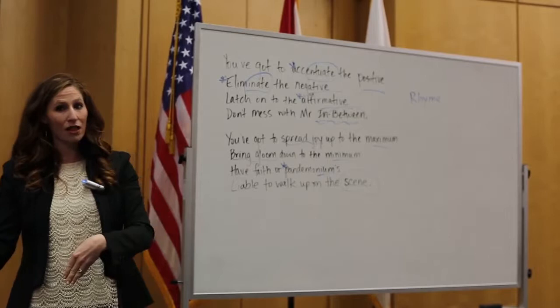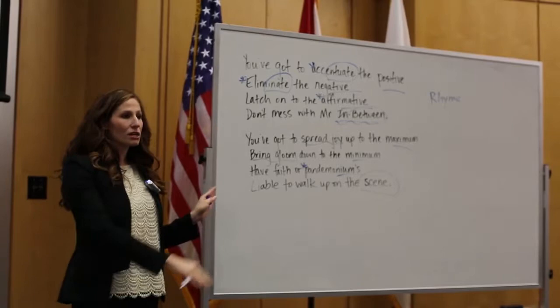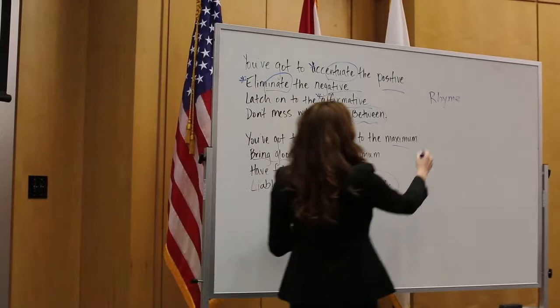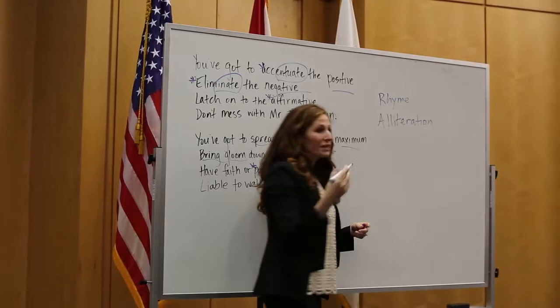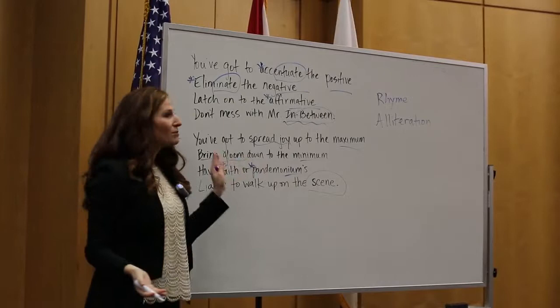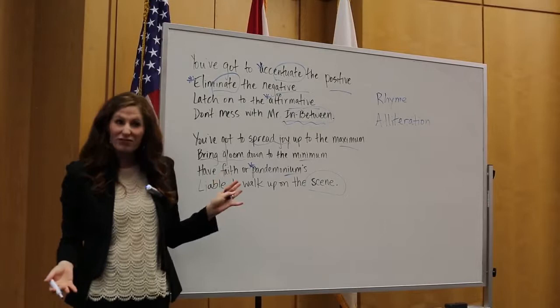There's another literary device that Johnny Mercer doesn't use in this song, but one that I love to introduce, which is alliteration. Alliteration is when you repeat the same sound over and over in a sentence. So, Johnny Mercer, when he was 15, he wrote a song — Sister Susie, strut your stuff. So everyone say that: Sister Susie, strut your stuff. Three times fast, go!